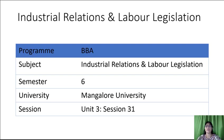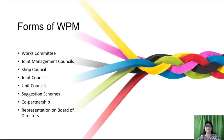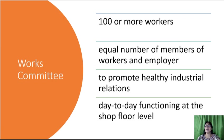Session 31 of Industrial Relations and Labor Legislation of 6th Semester BBA of Mangalore University. In this session, we shall study about the forms of workers' participation in management. The various forms are Works Committee, Joint Management Councils, Shop Council, Joint Councils, Unit Councils, Suggestion Schemes, Co-Partnership, and Representation on Board of Directors. Now let us see one by one.